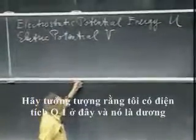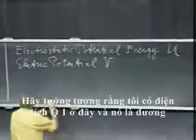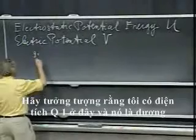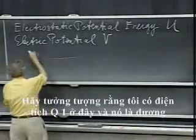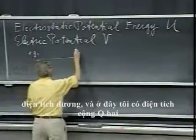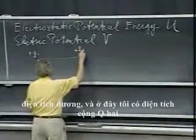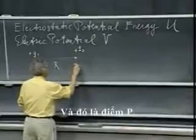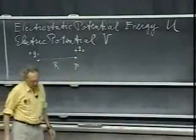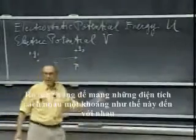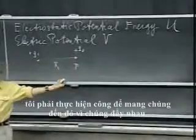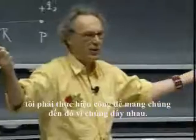Imagine that I have a charge Q1 here, and that's plus charge. And here I have a charge plus Q2, and they have a distance, their distance R apart, and that is point P. It's very clear that in order to bring these charges at this distance from each other, I had to do work to bring them there, because they repel each other.